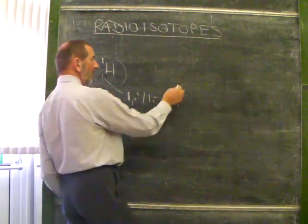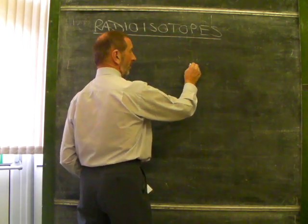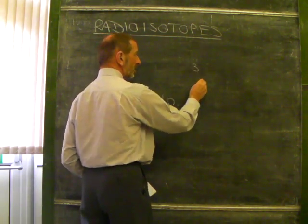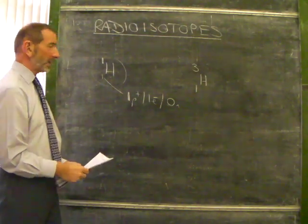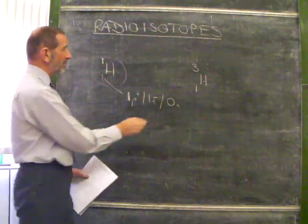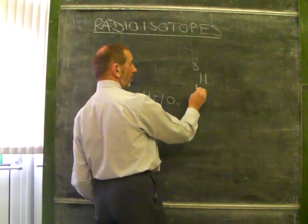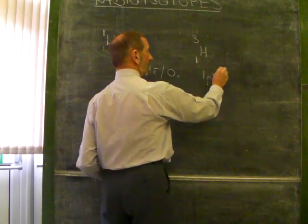However, if we need a different hydrogen atom out there, and this one exists, this one happens to be tritium. It's still hydrogen because it still has that one proton - one proton, one electron.